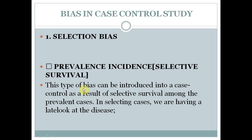The first selection bias in case-control study is prevalence-incidence or selective survival bias. This occurs because when we do a case-control study, such as on cancer, we include both recent (incident) cases and long-standing chronic (prevalent) cases — for example, someone diagnosed last month versus someone who has had the disease for 7 or 10 years.